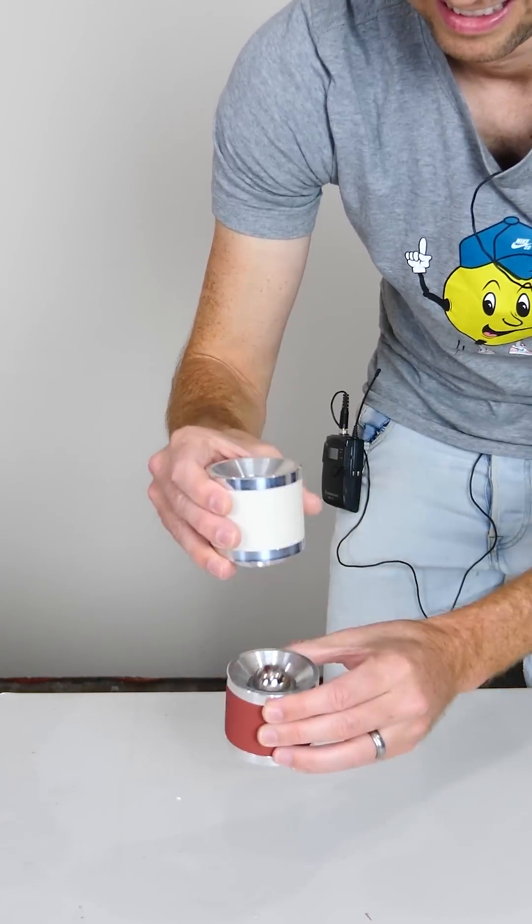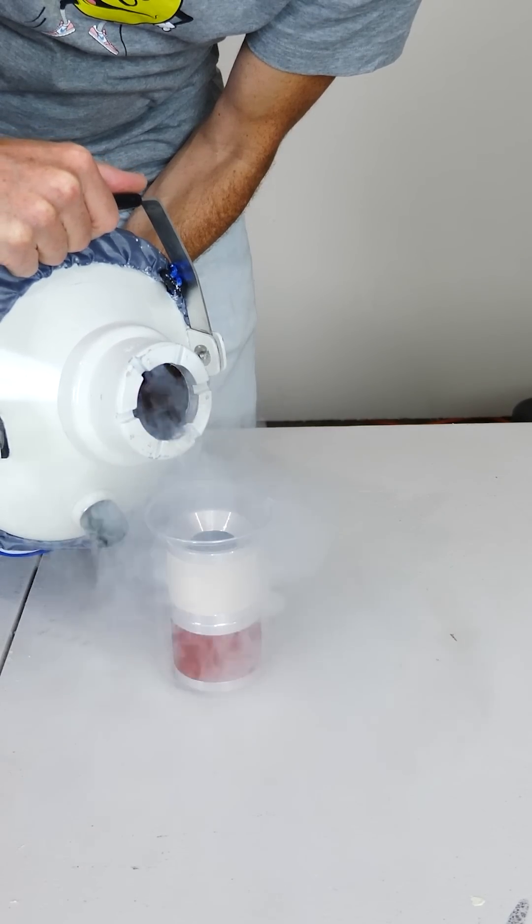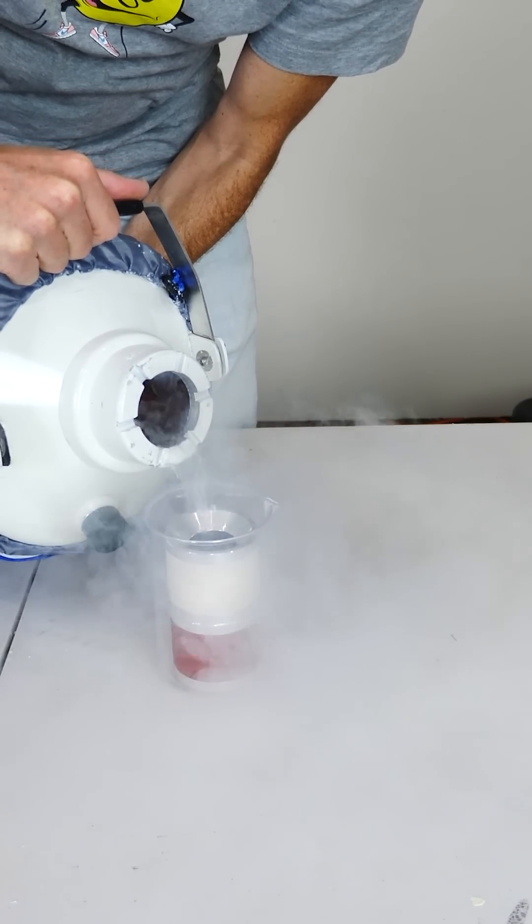You can make this effect even stronger by cooling the aluminum down. This lowers the resistance of the metal, allowing for larger eddy currents.